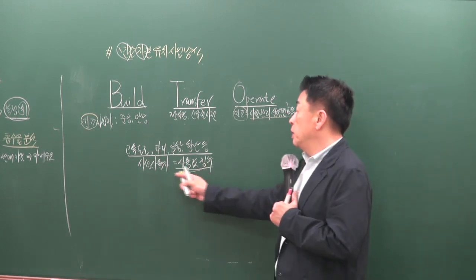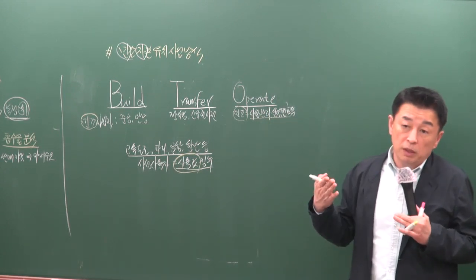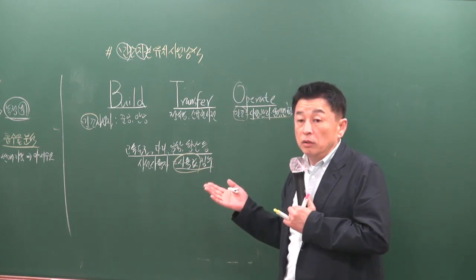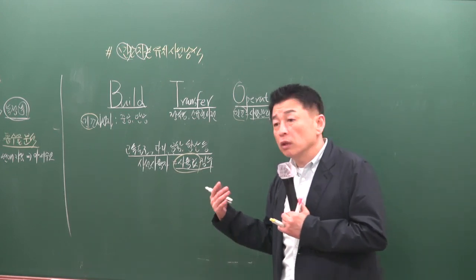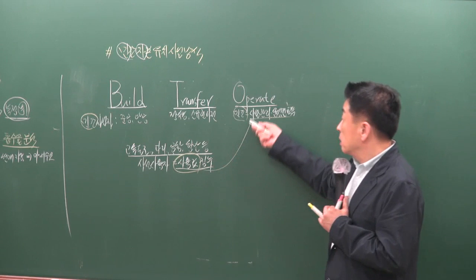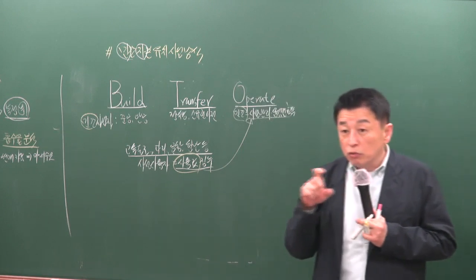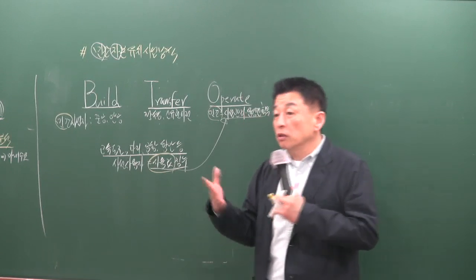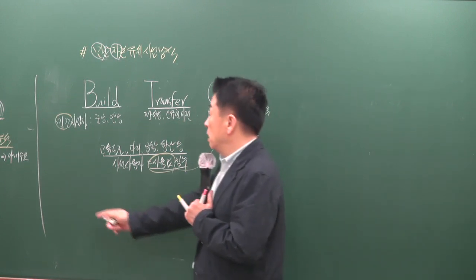BTO 방식에서는 통상 30년 정도의 시설관리 운영권을 획득하며, 그래서 민자 고속도로 통행료가 일반 도로보다 비쌉니다. 천안논산 고속도로, 인천국제공항 도로 등이 민자 고속도로입니다. 30년 기간 동안 투자비를 다 회수하면 청산합니다. 이와 반대 방식도 있습니다.